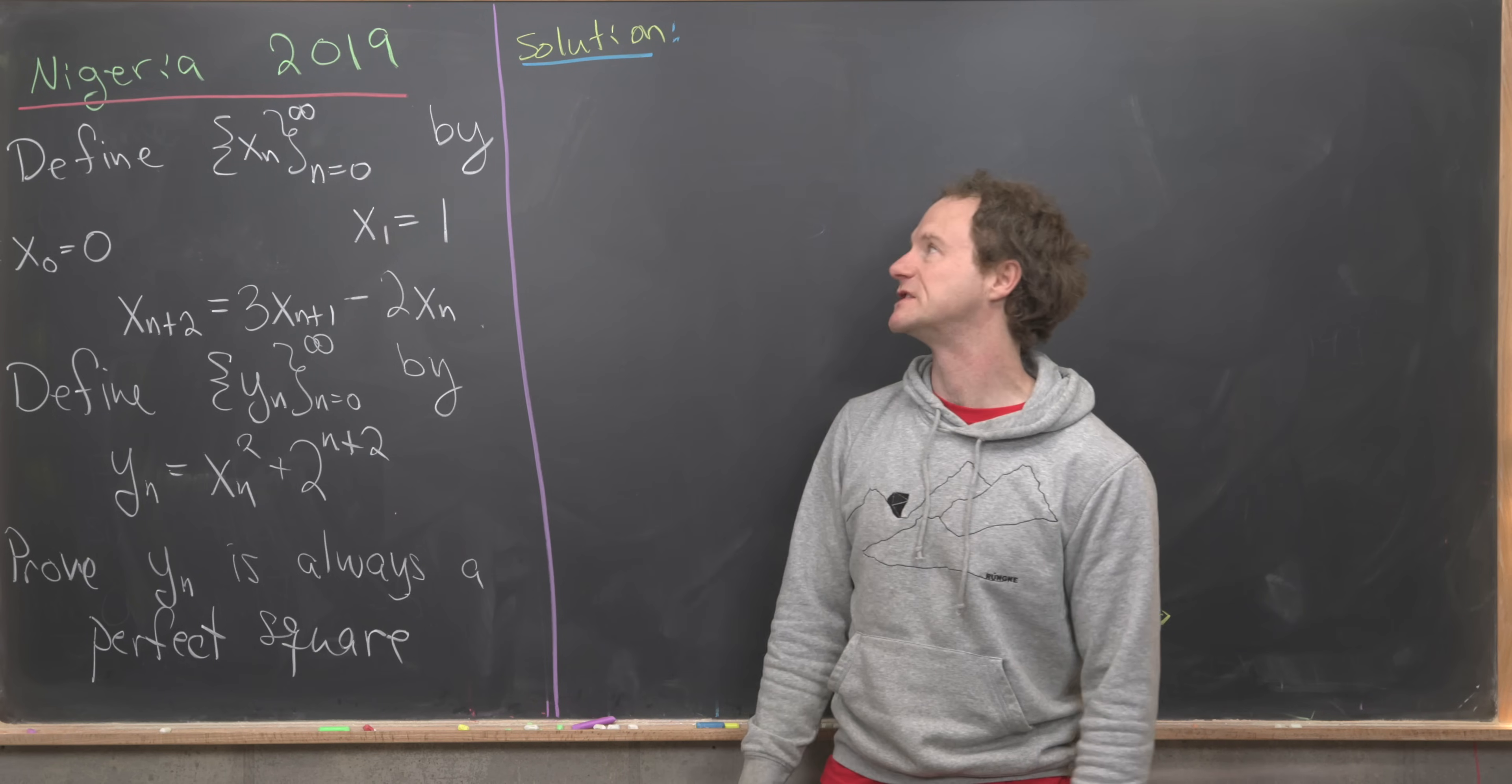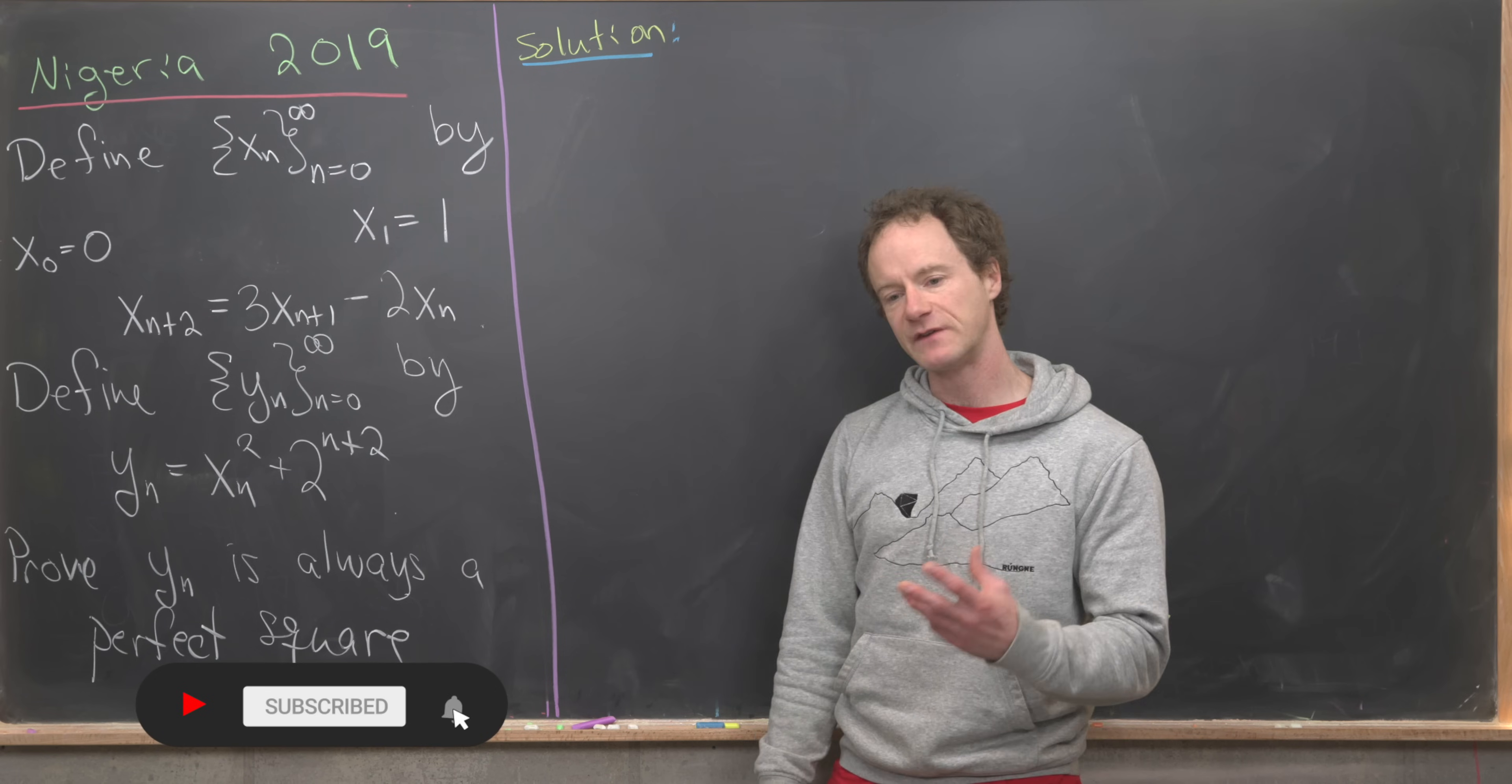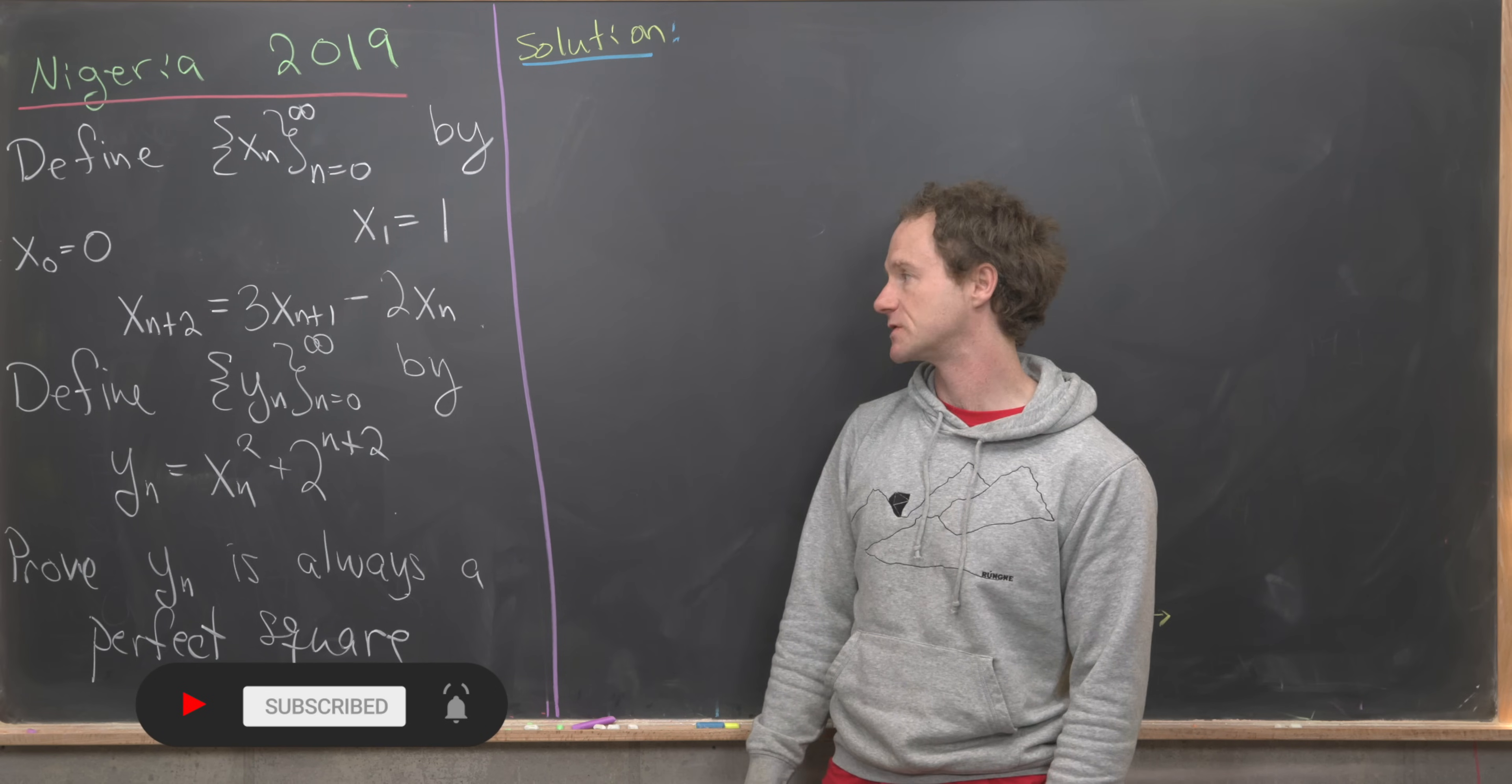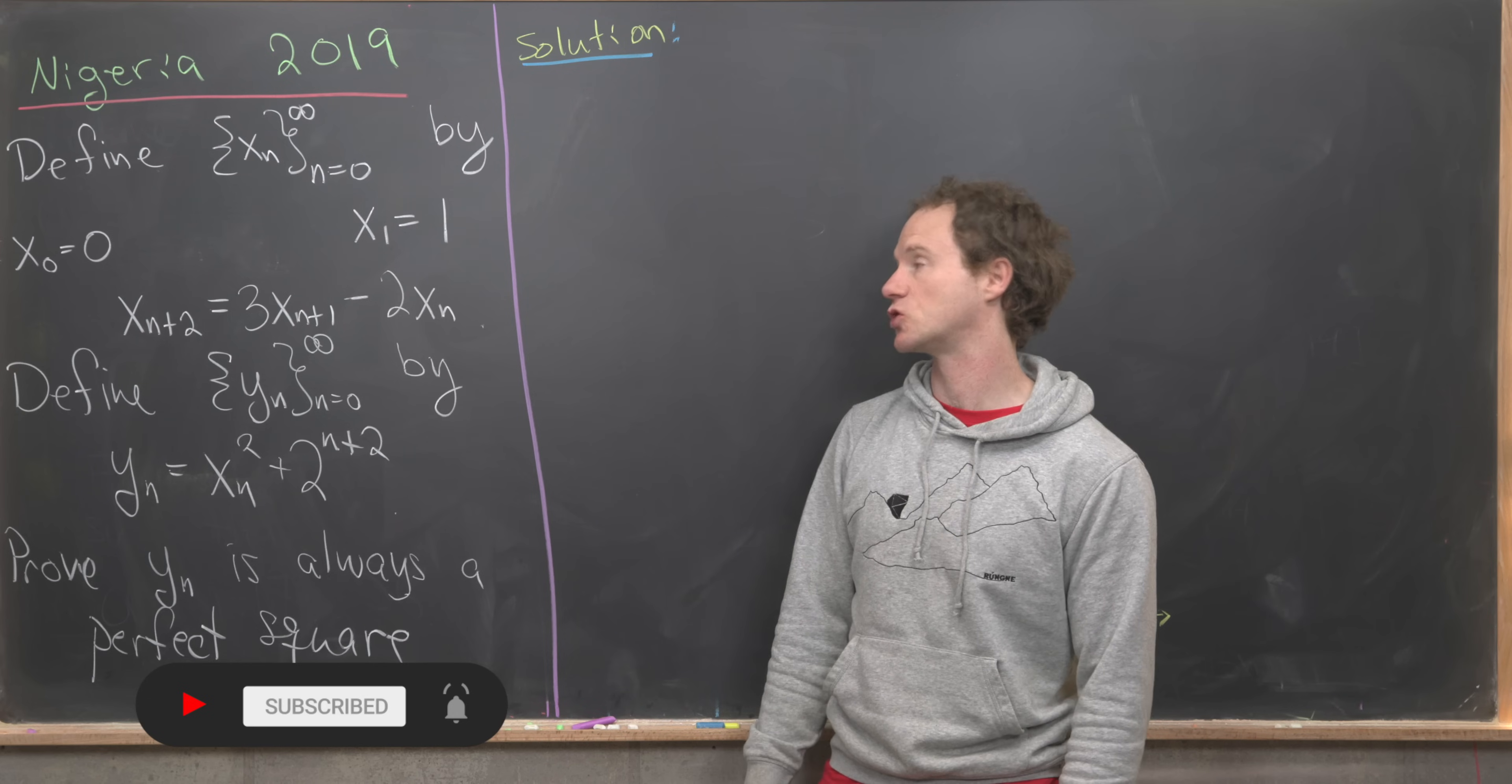Here we're going to look at a nice problem from the 2019 Nigerian Math Olympiad. It involves two sequences of numbers and showing that one of those sequences is always a perfect square.